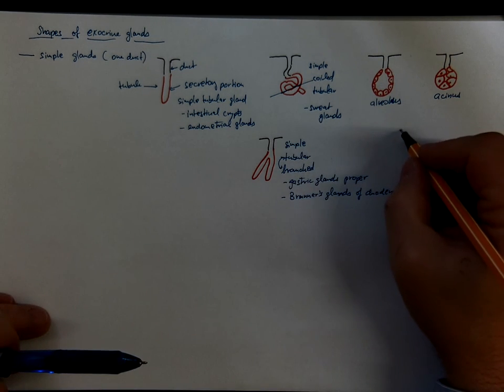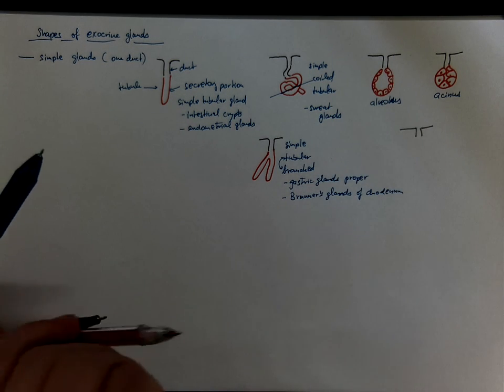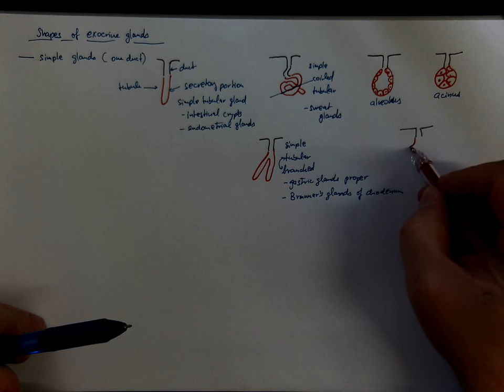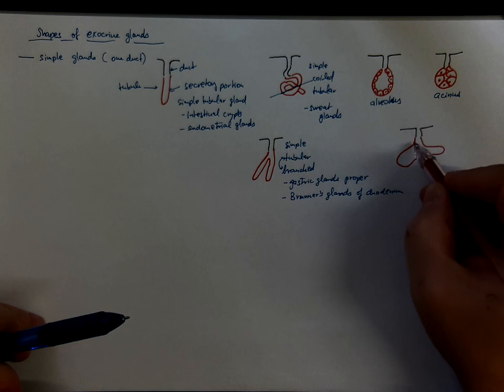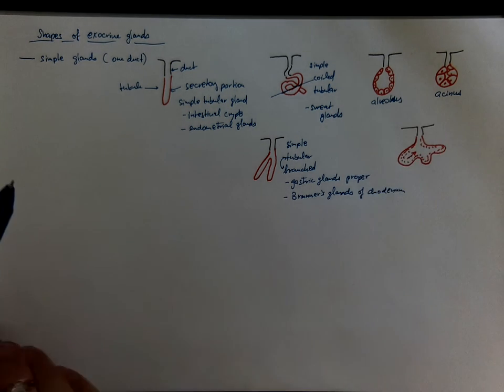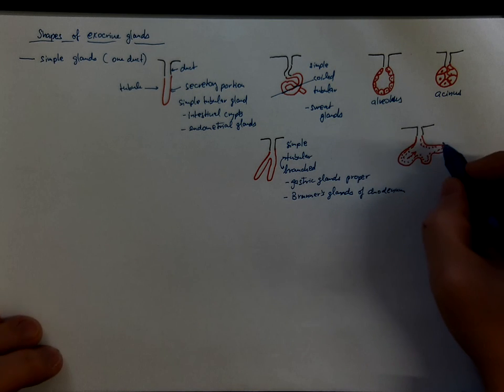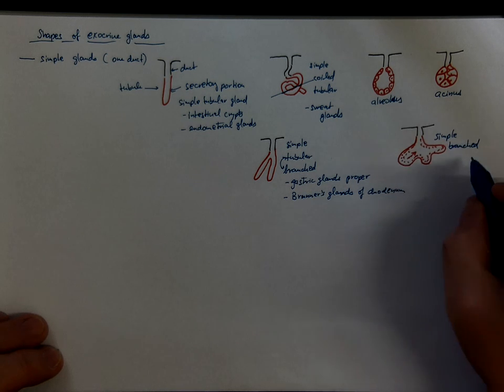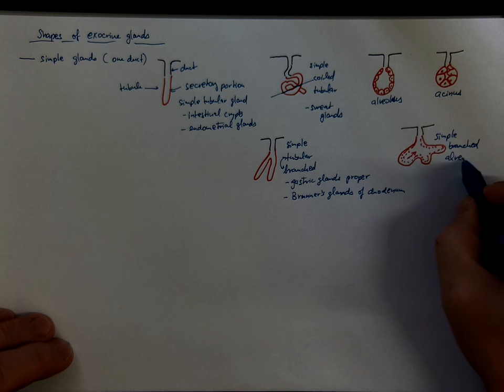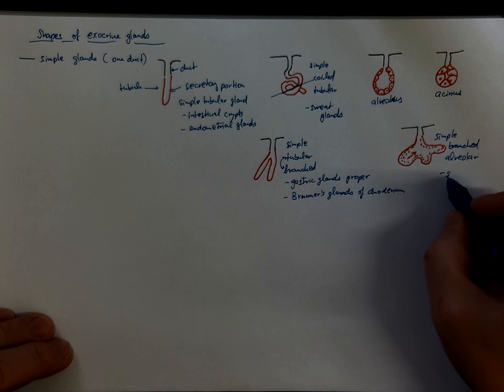You can have one duct and a branched alveolar shape with actually many cells and the holocrine secretion pattern. We already know what it is. So that would be simple branched alveolar gland and it is how sebaceous glands look like.